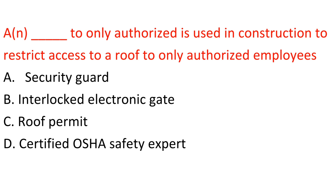Question: A dash is used in construction to restrict access to a roof to only authorized employees. A. Security guard. B. Interlocked electronic gate. C. Roof permit. D. Certified OSHA safety expert. Answer: C. Roof permit.